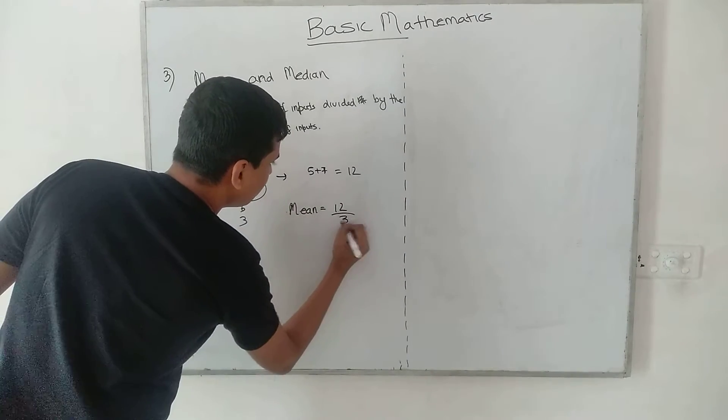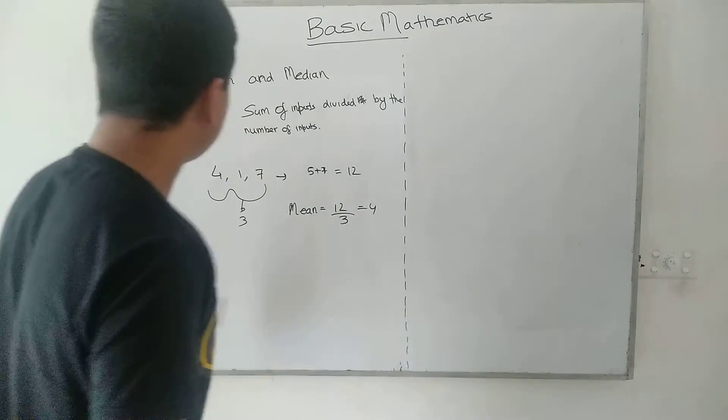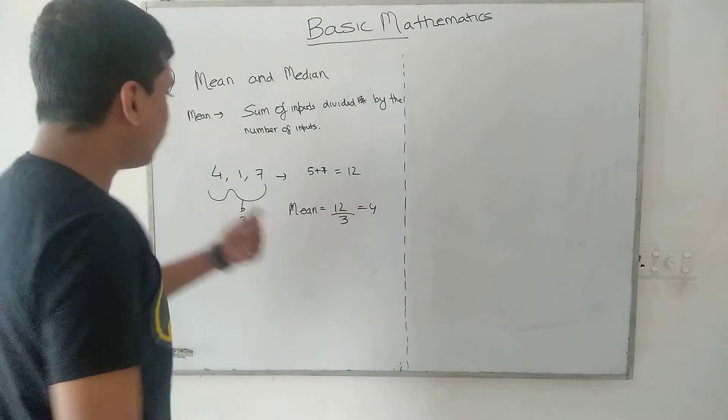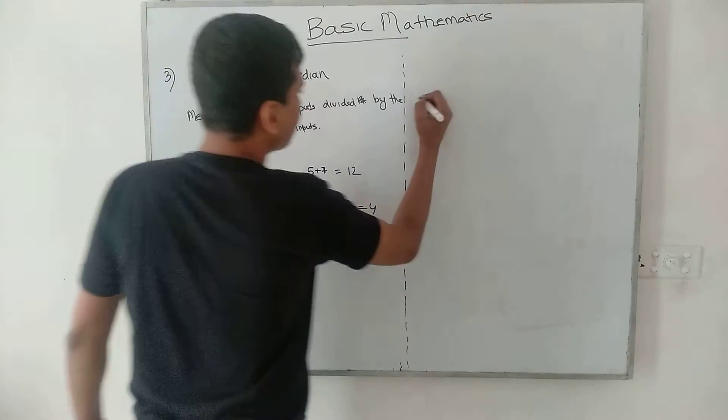The number of inputs are 3, so the mean would be equal to 12 by 3, that is equal to 4. So the mean of this particular sequence of numbers, 4, 1, and 7, is equal to 4.